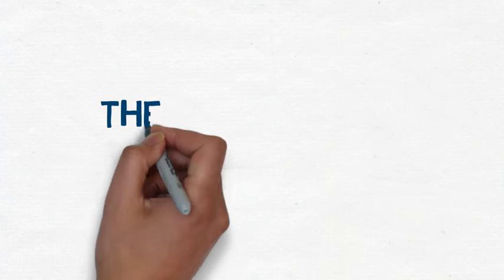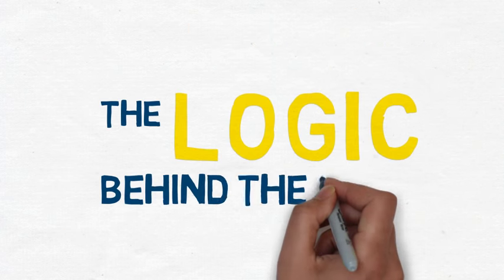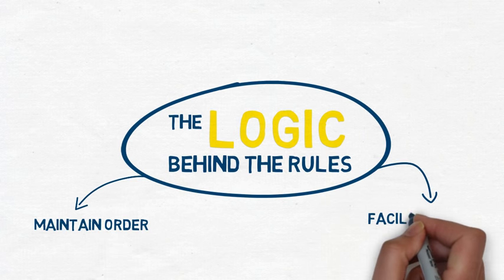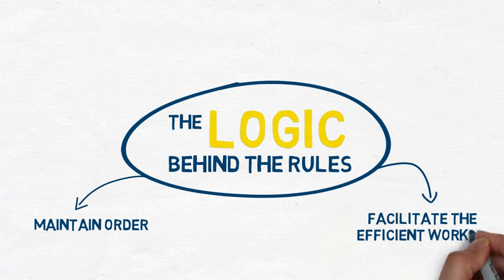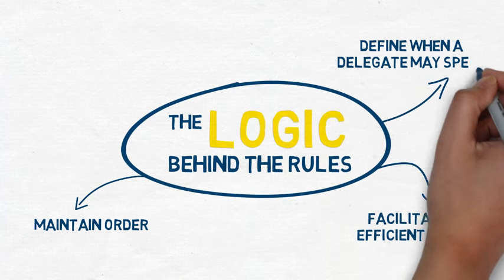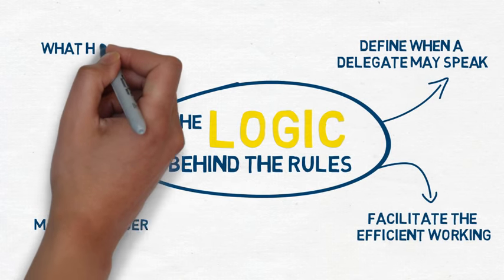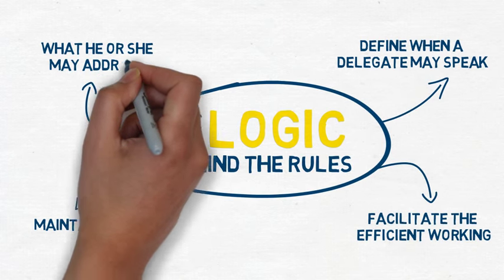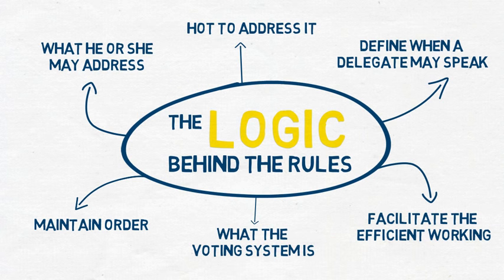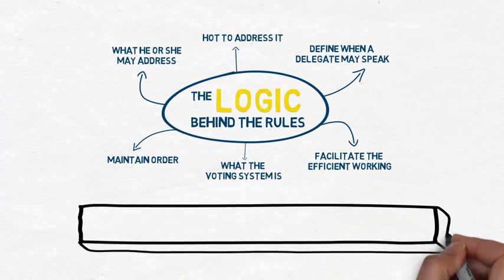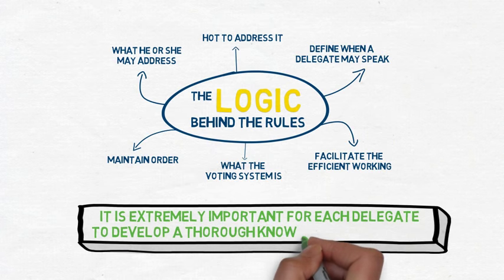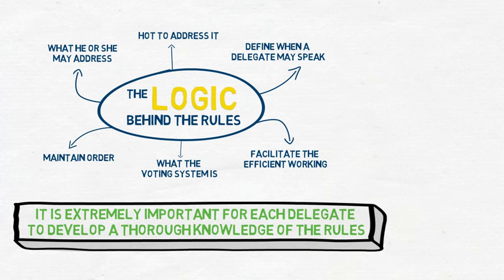The logic behind the Rules of Procedure is simple. They help to maintain order and facilitate the efficient workings of the groups. They define when a delegate may speak, what he or she may address, how to address it, or what the voting system is. Therefore, it is extremely important for each delegate to develop a thorough knowledge of the rules.